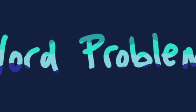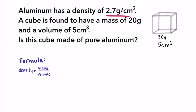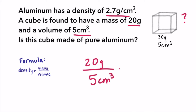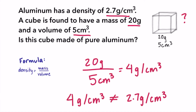Let's try a word problem. Aluminum has a density of 2.7 grams per cubic centimeter. A mystery cube is found to have a mass of 20 grams and a volume of five cubic centimeters. Is this cube made of pure aluminum? We can solve this by dividing 20 grams by five cubic centimeters, which gives us four grams per cubic centimeter. This does not equal the density of aluminum, so the cube is not made of pure aluminum.